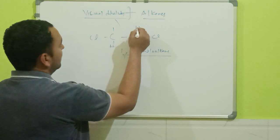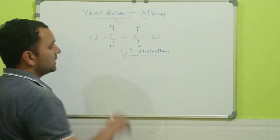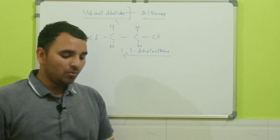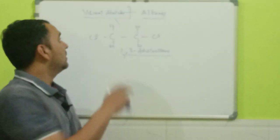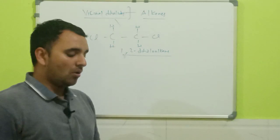They are also called one comma two dihalo alkanes. The remaining will be your hydrogen atoms. So this is what your vicinal dihalides.